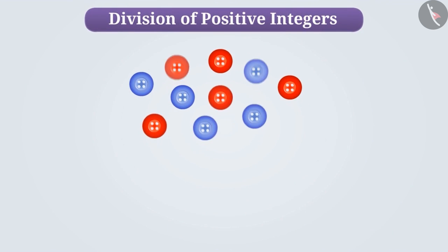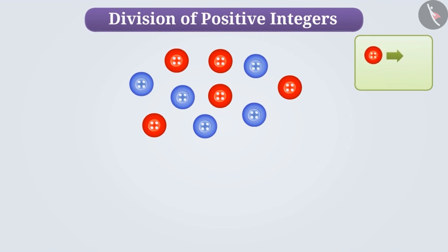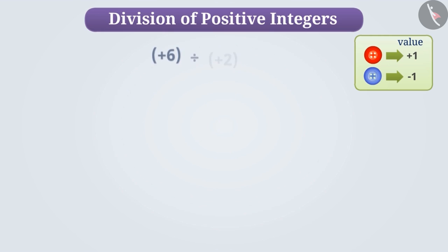There are two types of buttons here, one red and one blue. Suppose the value of the red button is plus 1 and the value of the blue button is minus 1. Using these, let us understand the division of two positive integers.